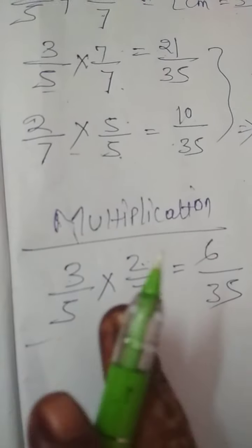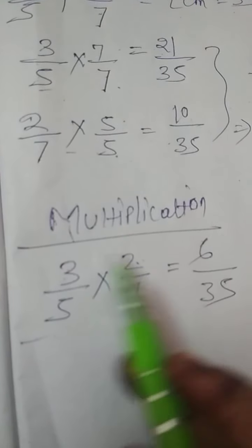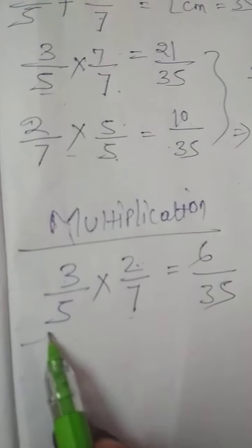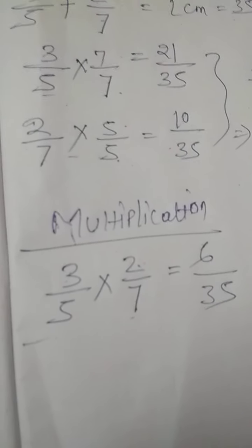Understood? Multiplication is just nothing — just multiply the upper side, then multiply the lower side. Finished.